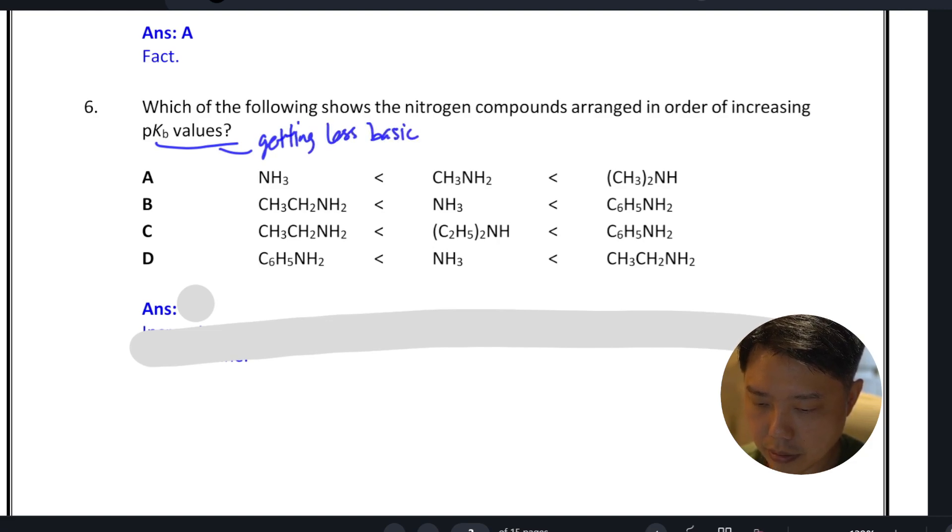If you look at the options, you need to start from the most basic to the least basic. This one is the most basic because you have an electron donating group, so option A is out.